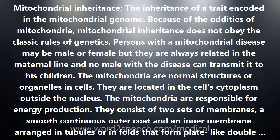They consist of two sets of membranes: a smooth continuous outer coat and an inner membrane arranged in tubules or in folds that form plate-like double membranes called cristae. The mitochondria are the principal energy source of the cell, thanks to the cytochrome enzymes of terminal electron transport, the enzymes of the citric acid cycle, fatty acid oxidation, and oxidative phosphorylation. The mitochondria convert nutrients into energy as well as doing many other specialized tasks.